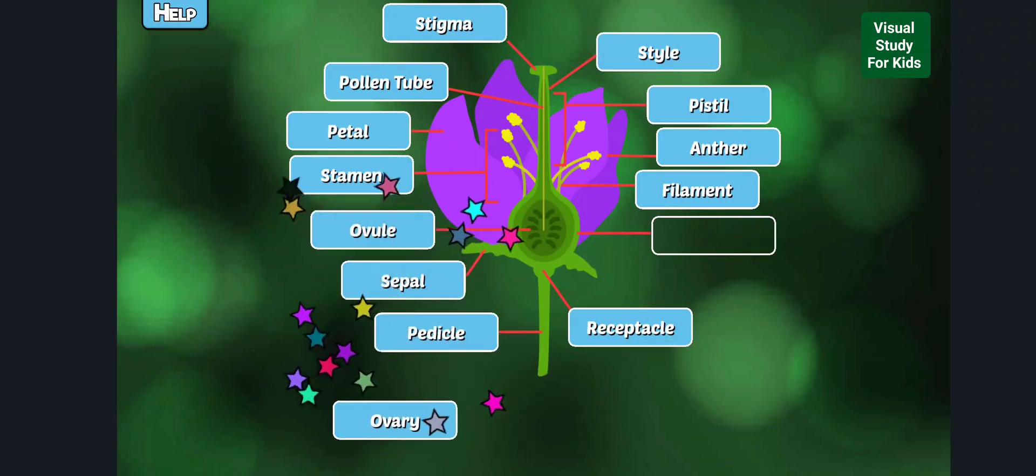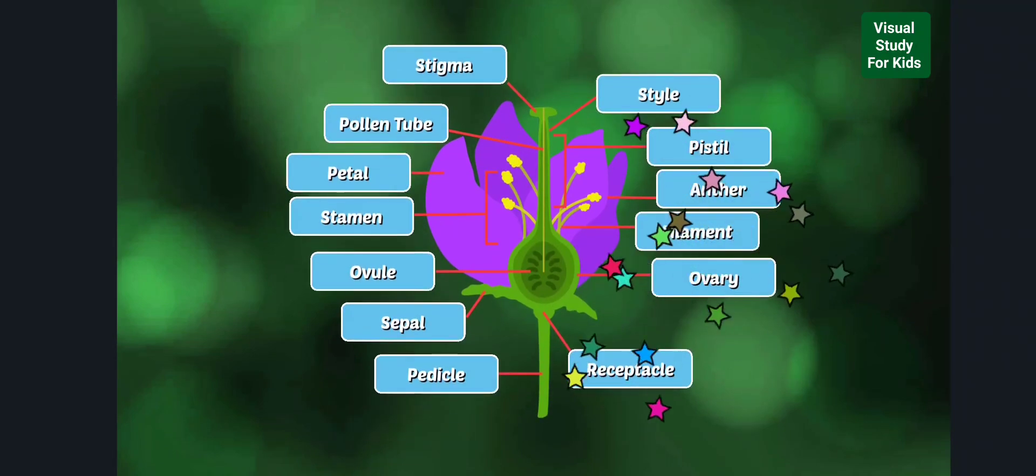Sepal: The outer parts of the flower, often green and leaf-like. Ovary: The ovary produces seeds.